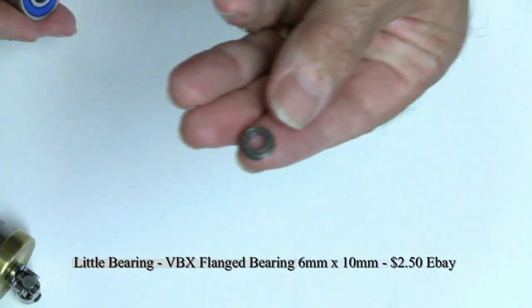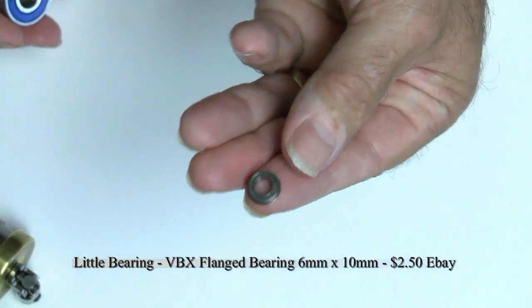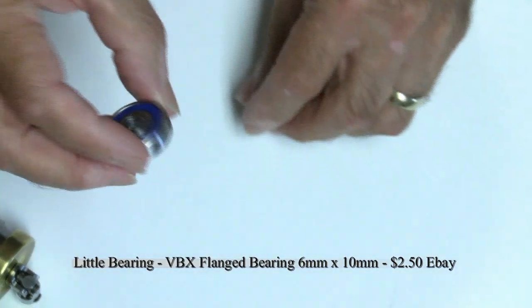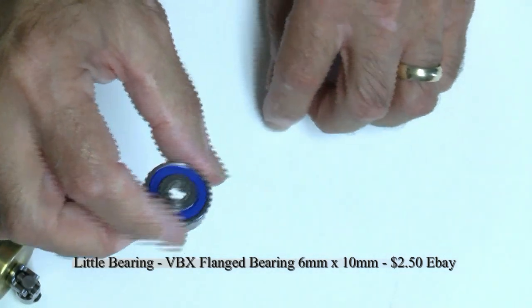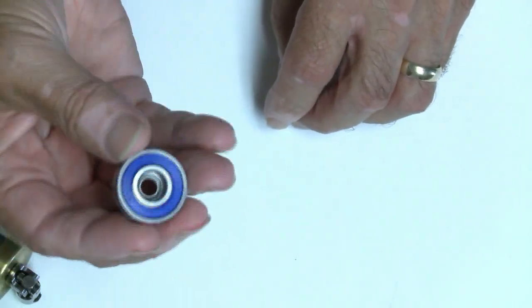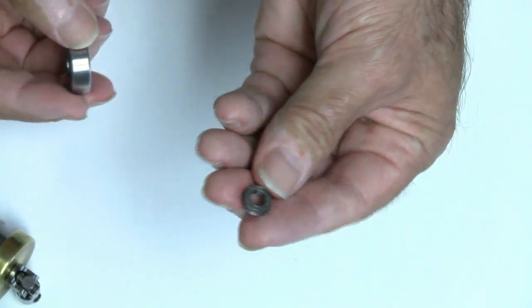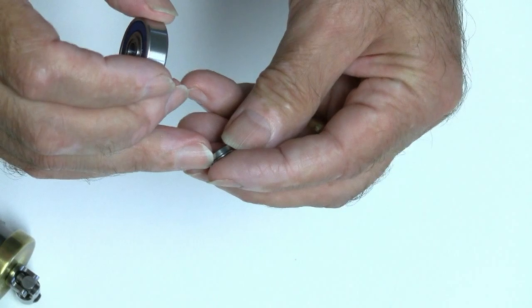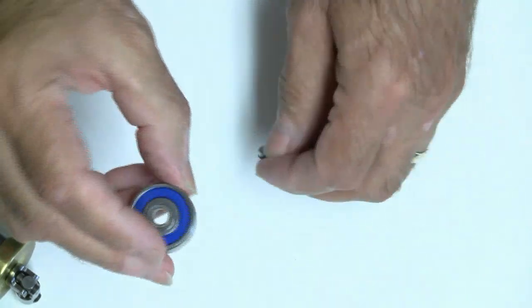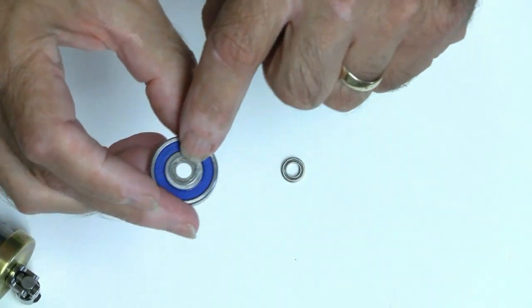I discovered that once I got these little bearings installed in here, the overall radial resistance was essentially nothing because the resistance of these little guys is very, very low. It turned out that it was actually a better design than had I just gone with the large bearing by itself.